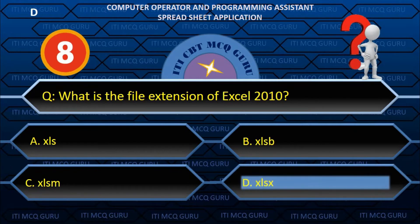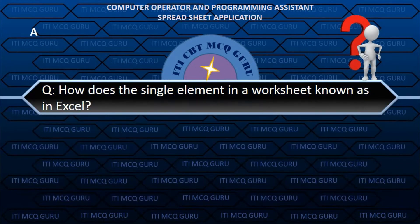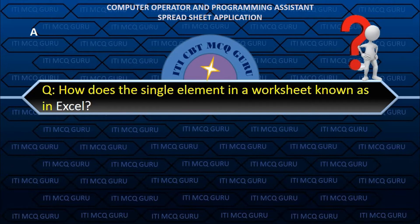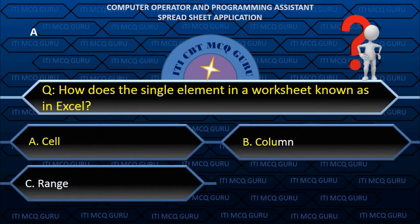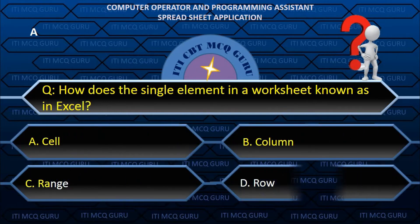How does the single element in a worksheet known as in Excel? A. Cell.